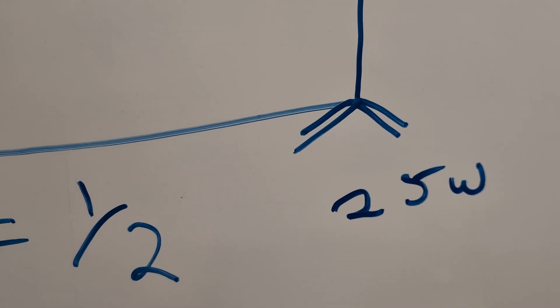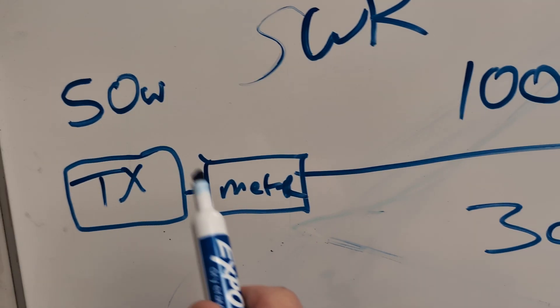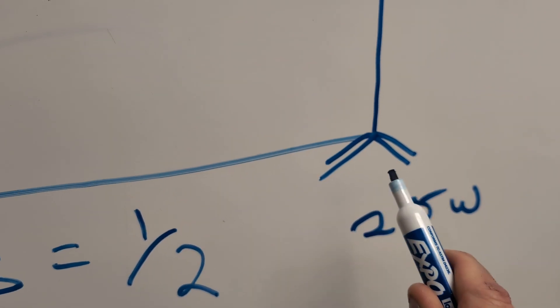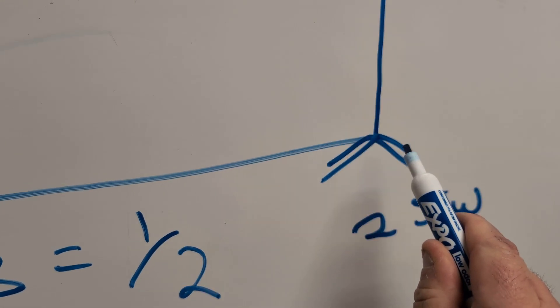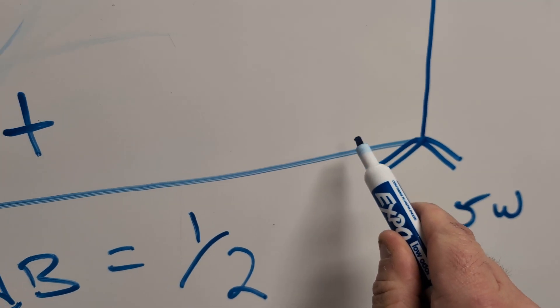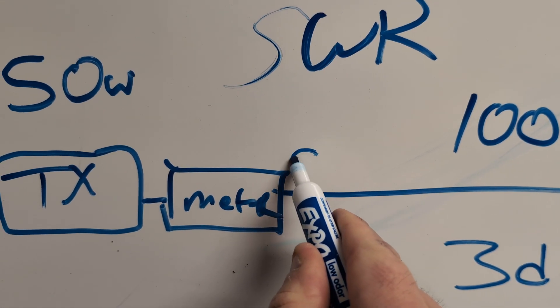But SWR is reflected wattage. So what happens is wattage goes from here all the way down, and you get 25 watts here. But if you have a bad SWR and it's reflecting 10 watts back, well, you're only getting 5 watts of reflective power here.